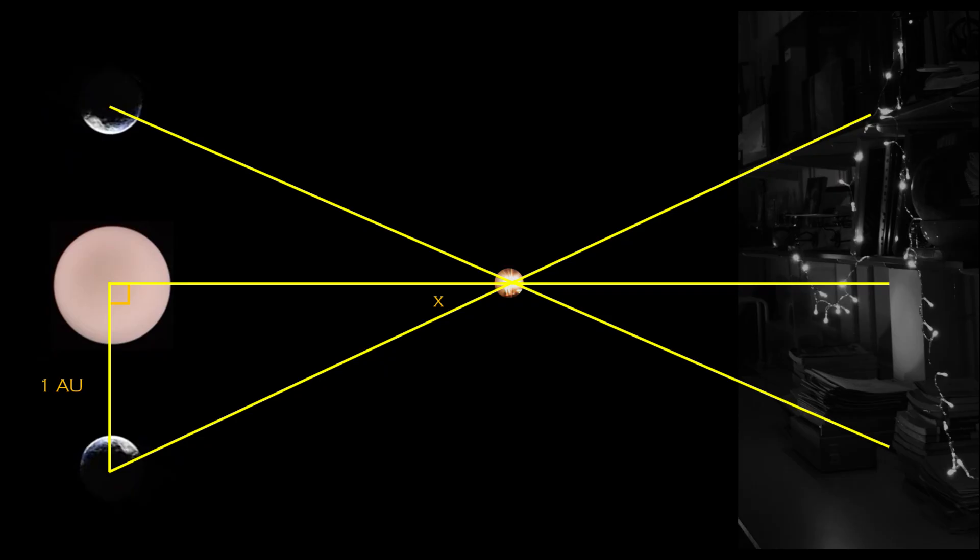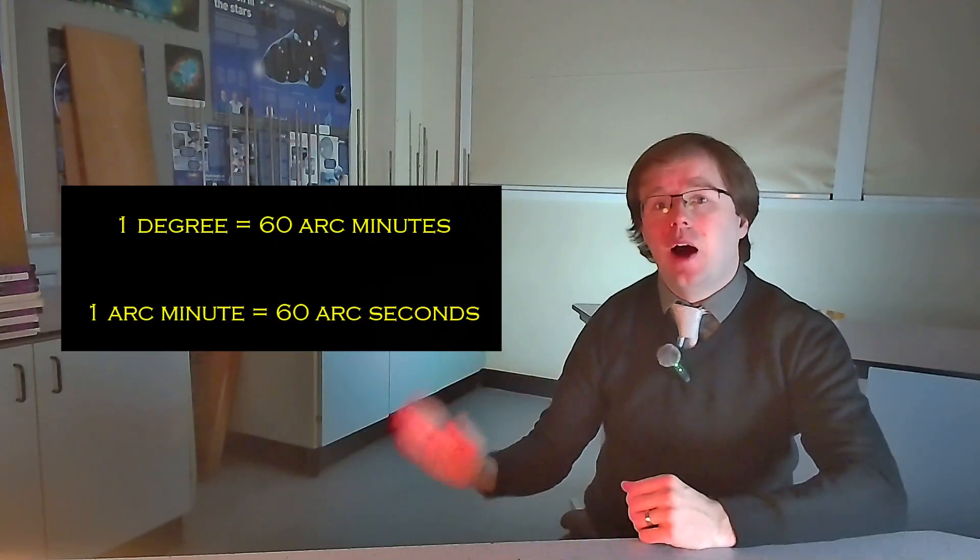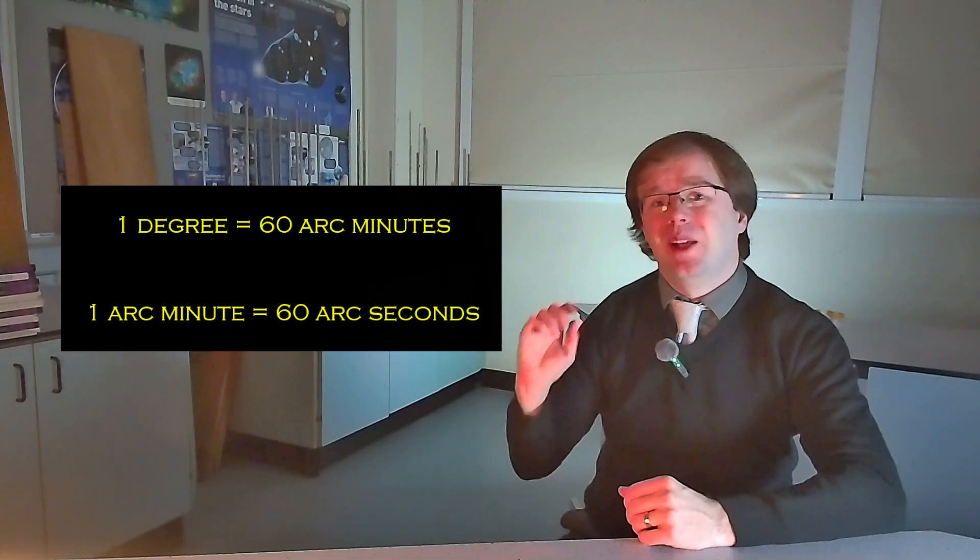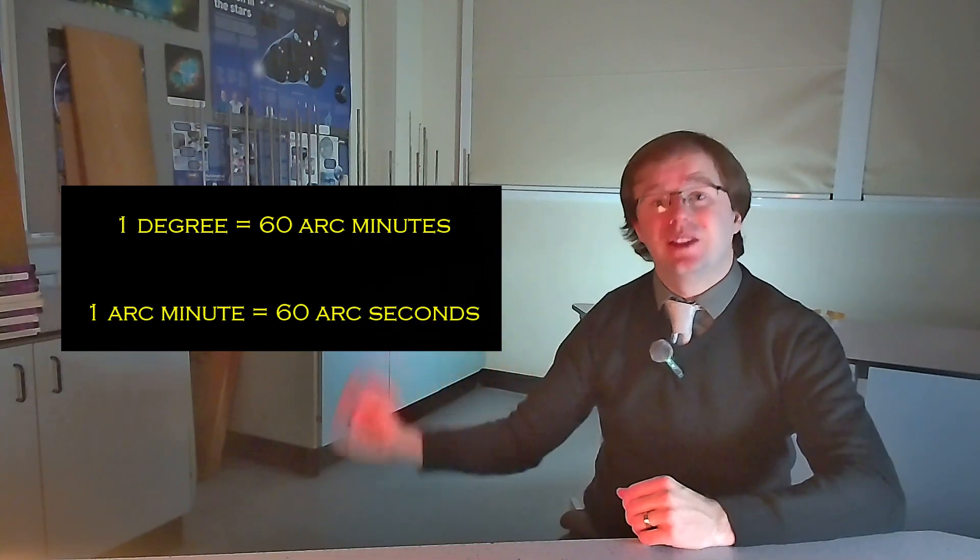We take half the overall angle that the star moves through for here, and with some calculations, we can work out the distance to the star. These angles tend to be incredibly small, to the point that working in degrees isn't the best idea. As such, we can split one degree into 60 arc minutes, and each one arc minute can be split into 60 arc seconds.